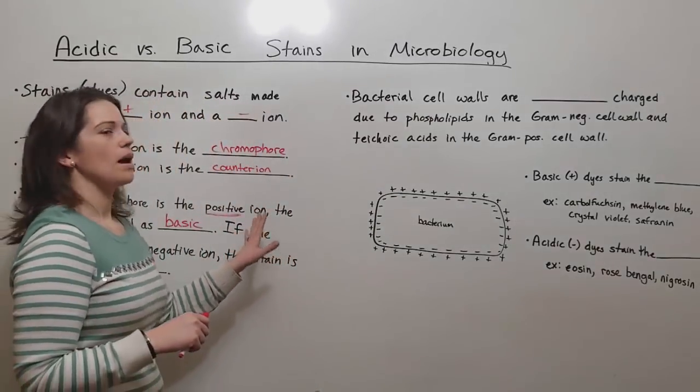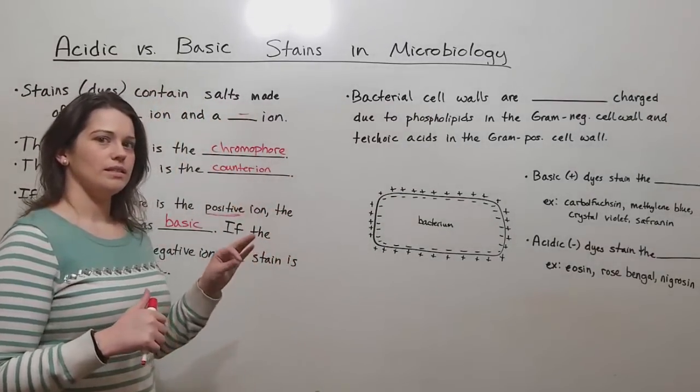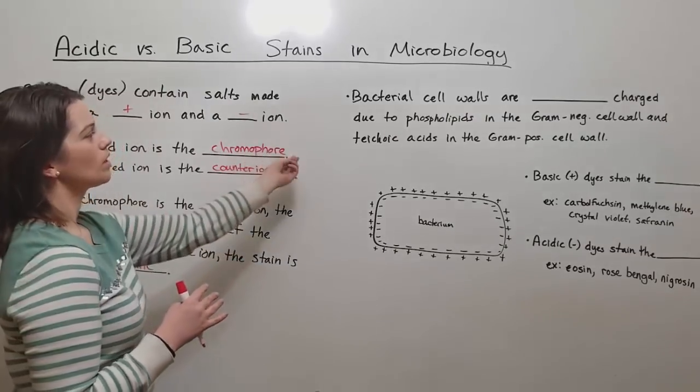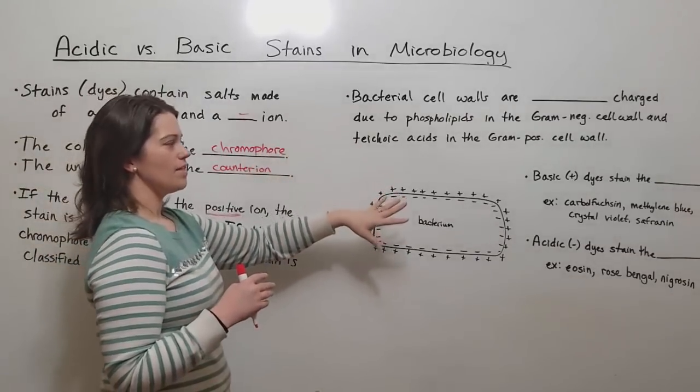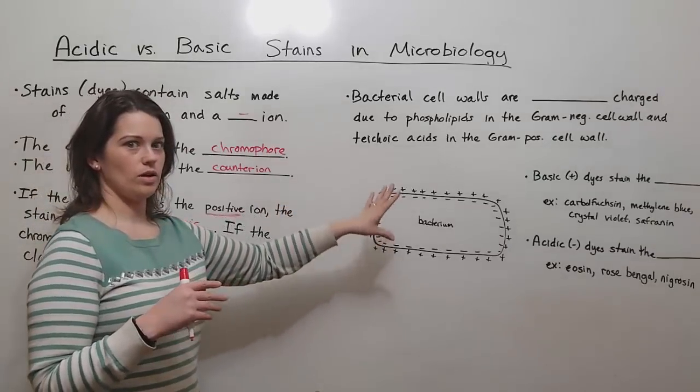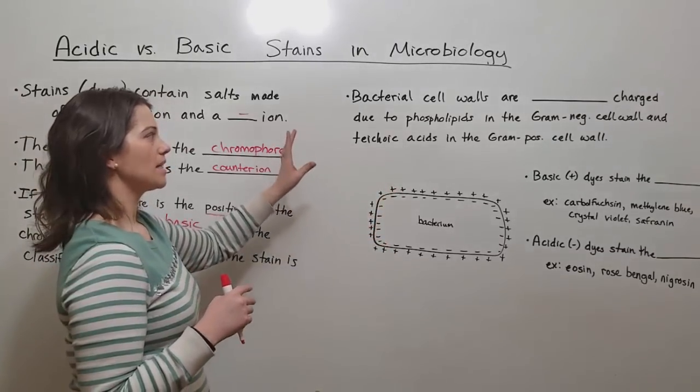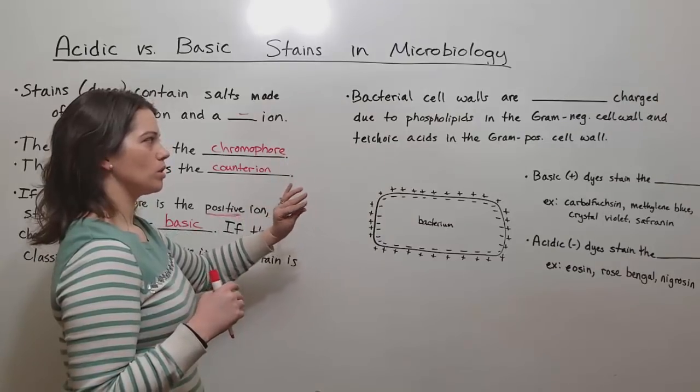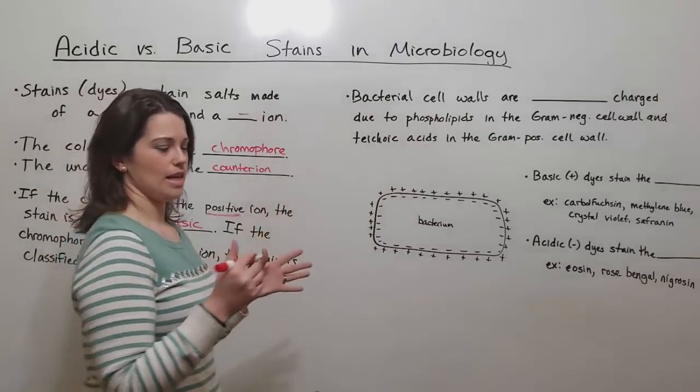Now let's talk about the different ways in which these two types of stains can be used. In order to understand this, you need to have a good understanding of the bacterial cell wall. Bacterial cell walls are negatively charged.